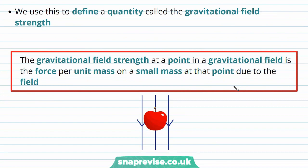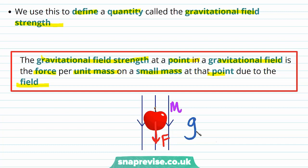We use this to define a quantity called the gravitational field strength. The gravitational field strength at a point in a gravitational field is the force per unit mass on a small mass at that point due to the field. So we have a small mass m in a gravitational field, and it's going to experience a force on it. We define the gravitational field strength as being the force divided by the mass.